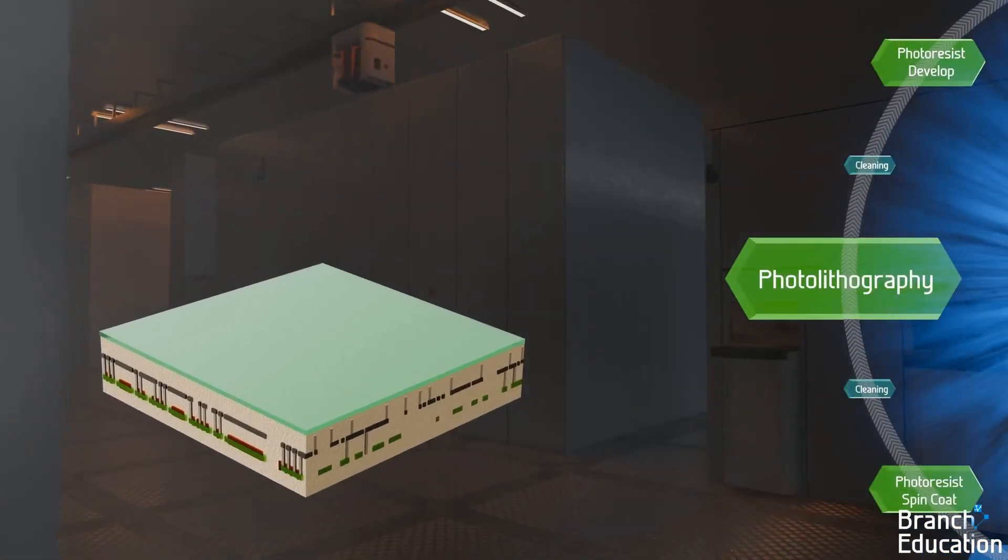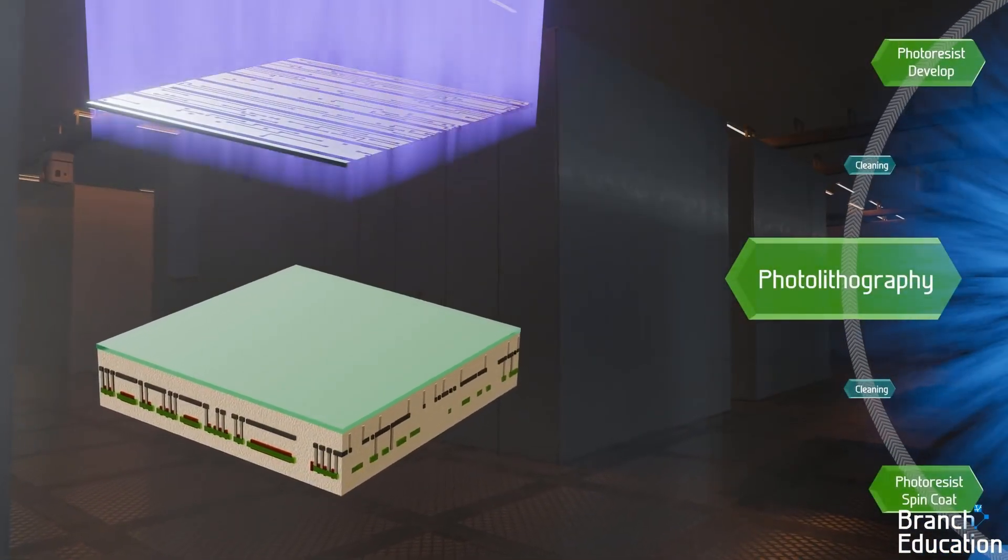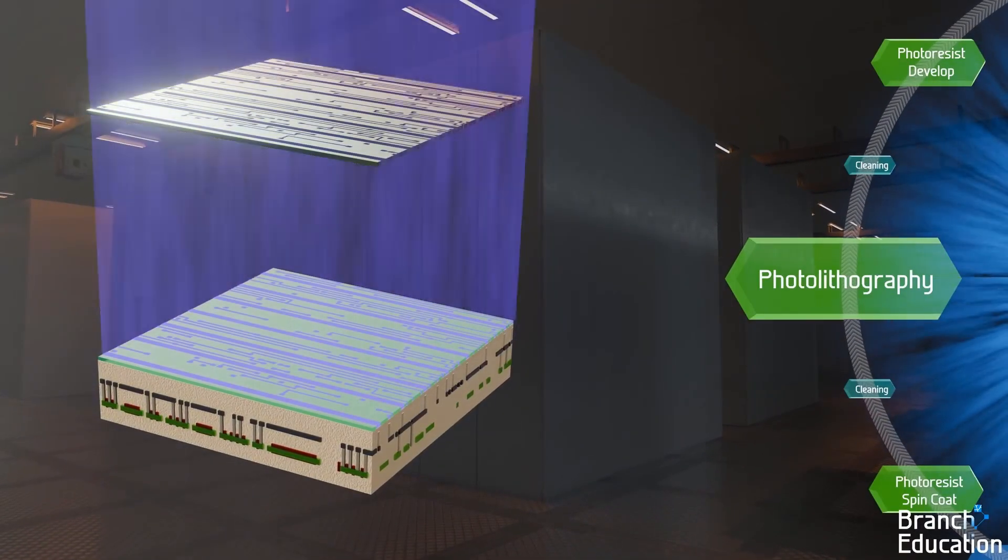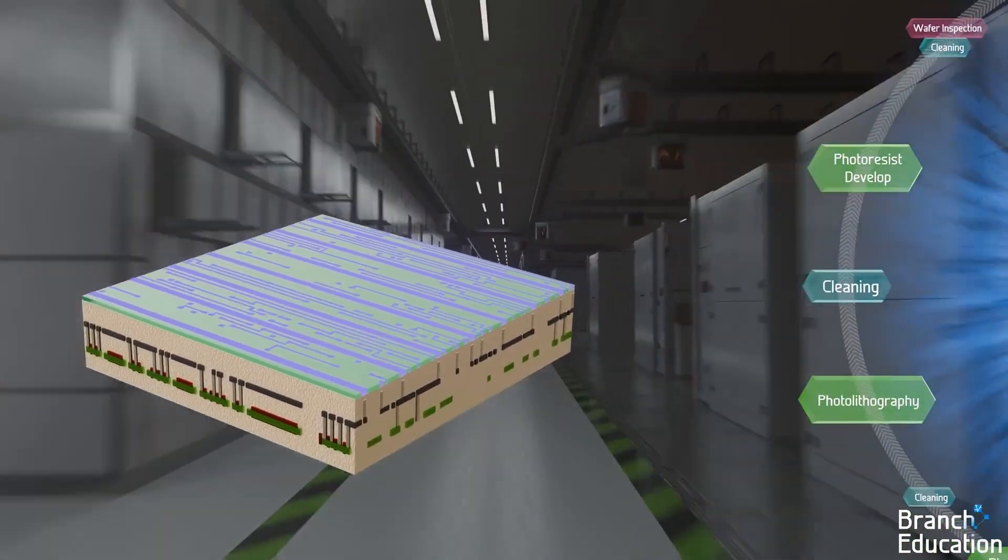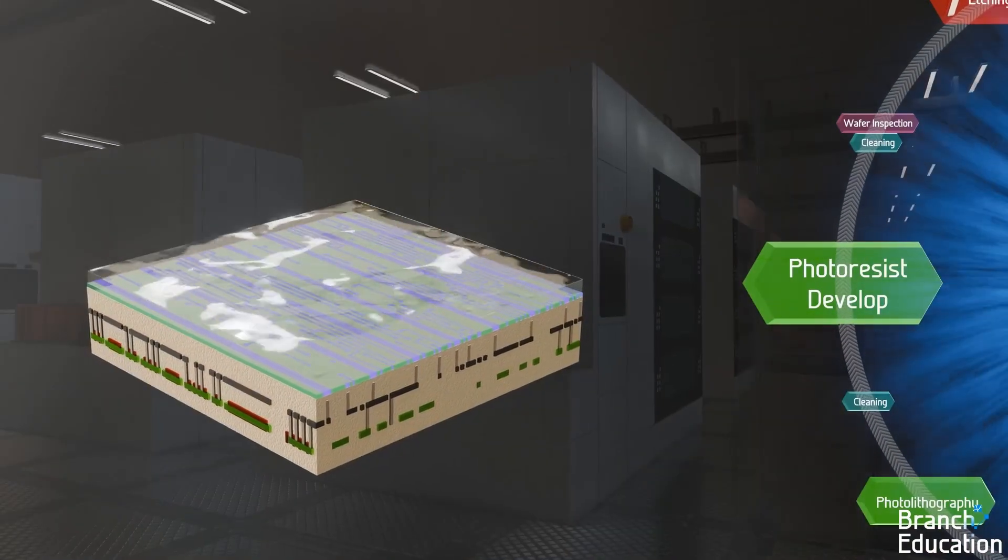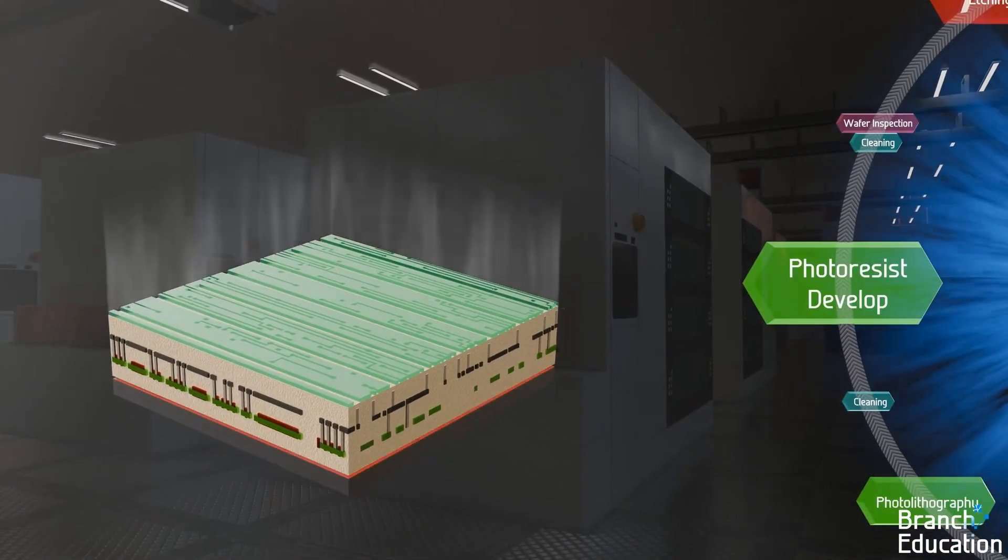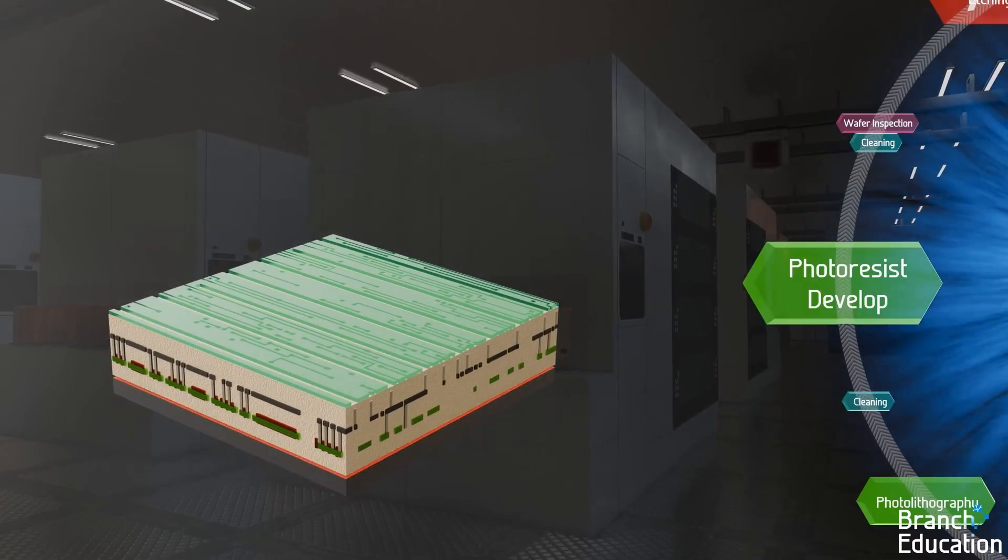The wafer then travels to the photolithography tool, where the design from the photomask is transferred to each of the chips on the wafer by weakening the areas of photoresist hit by the light. The wafer next goes to the developer to wash away the sections that were hit by the light from the lithography tool, and then through a hard bake to harden the remaining photoresist.